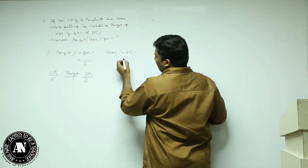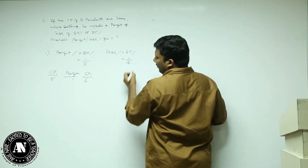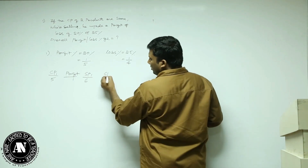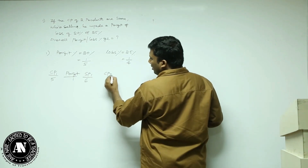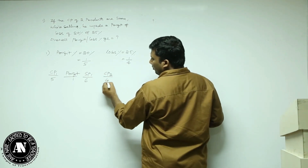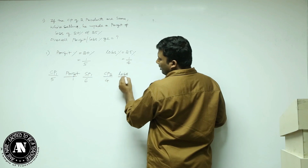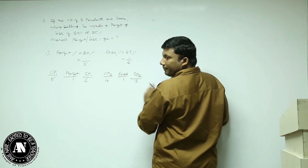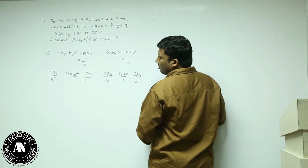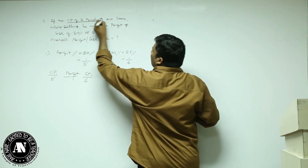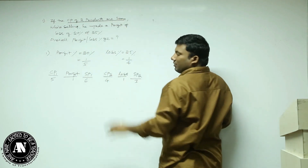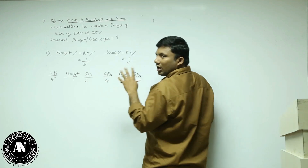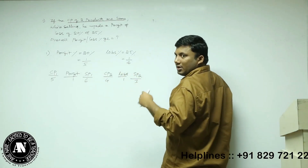Loss is 25%, which is 1 by 4. That means on cost price 4, I got a loss of 1, so selling price will be 3. But the question says cost price of two products are the same. This cost price is 5 and that is 4 — they are not same.